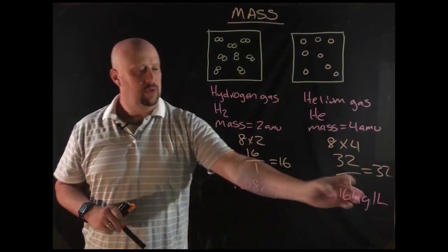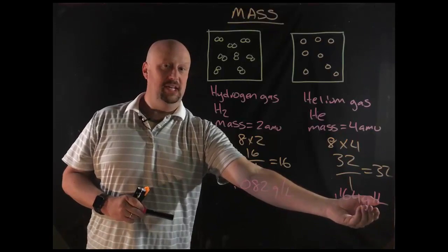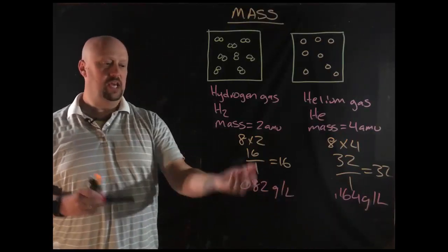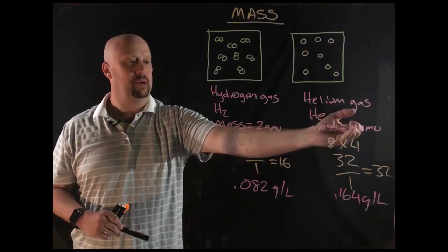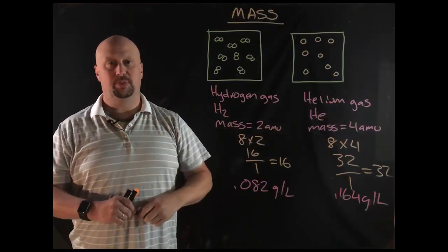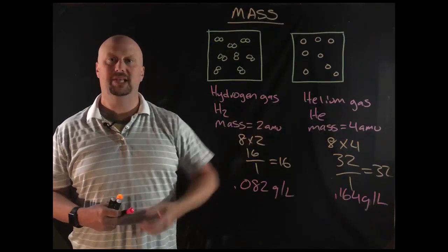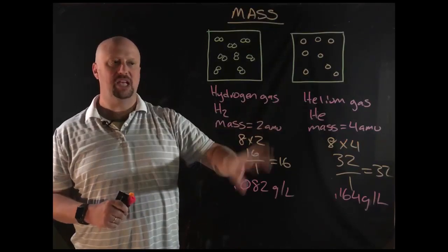Okay, so these are the real values. These were just my made-up values. As you can see, the density of helium is essentially exactly twice the density of the hydrogen gas. Why is that? Well, because the mass of the helium is pretty much exactly twice the mass of the hydrogen gas. Okay, so that's the mass part. Let's talk about volume.